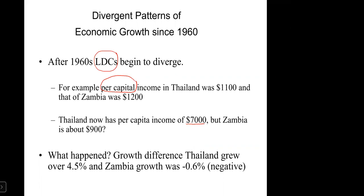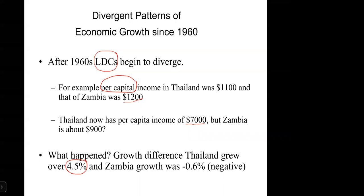This happened because the growth numbers are different. Thailand grew at over 4.5% per year while Zambia's growth was negative — specifically about negative 0.6% per year — which explains why Zambia declined from $1,200 to $900. A small difference in growth rate translates into a very big difference over time. This brings us to the Rule of 70.